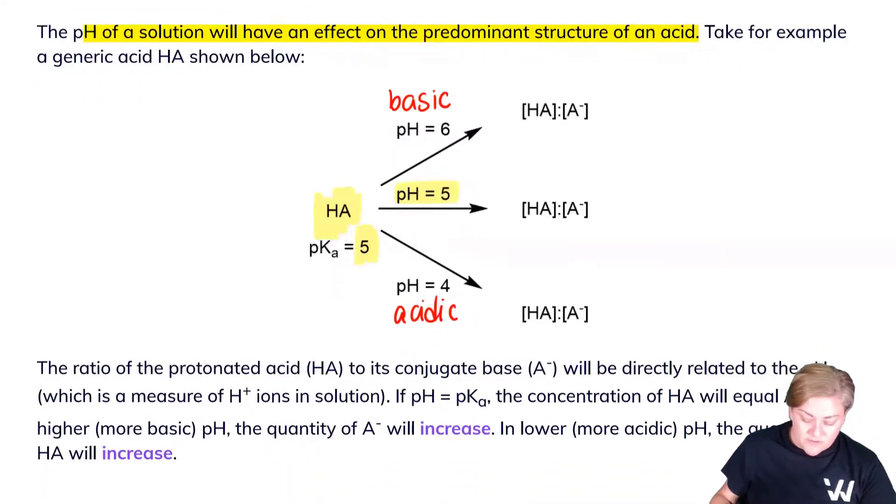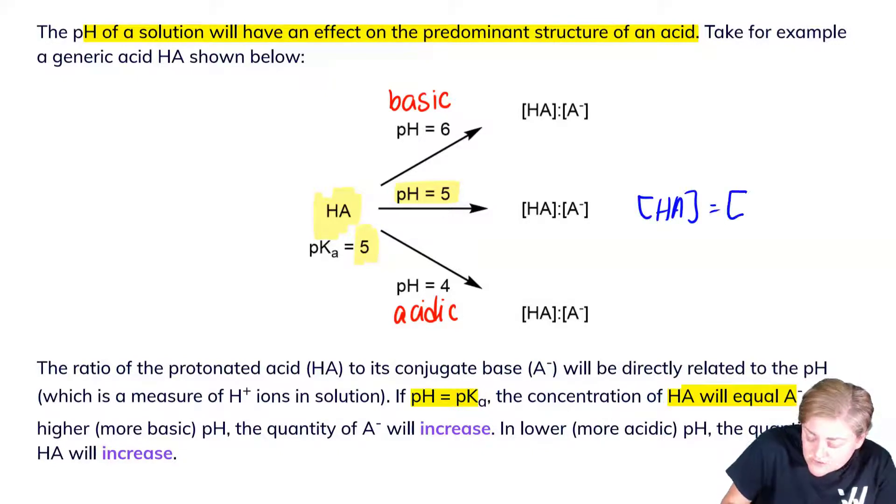So what influence will this have? Well, the ratio of the protonated acid and its conjugate base will be directly related to the pH, which is a measure of the hydrogen ion in solution. If pH is equal to pKa, then the concentration of HA will equal that of A-. So here, concentration of HA is equal to concentration of A-.